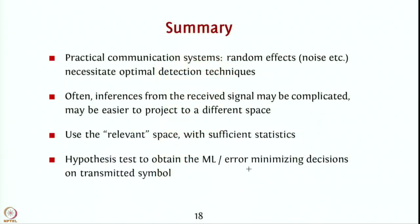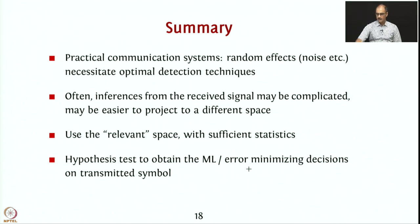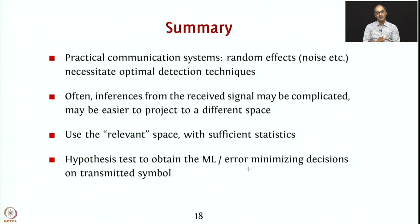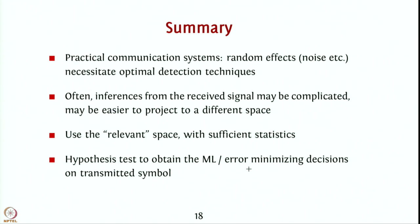To summarize what we have learned over the past few lectures: practical communication systems have random effects such as noise, necessitating optimal detection techniques. Inference from received signals may be complicated, and it may be easier to work in a transformed space using sufficient statistics. Hypothesis testing to obtain the maximum likelihood or minimum error decision on transmitted symbols is a key tool we will use to recover data and assess error rates. These aspects will be seen in the next lecture, followed by implementation on GNU radio.